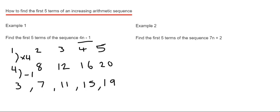So let's move on to example 2. This time we've got 7n plus 2. I'll just write down our numbers 1 to 5 again.